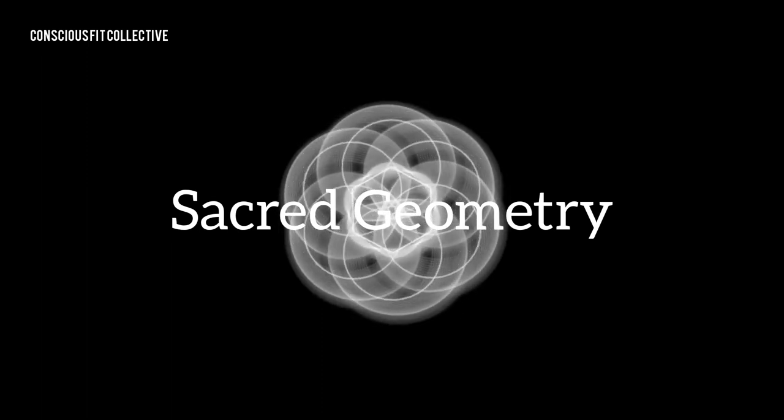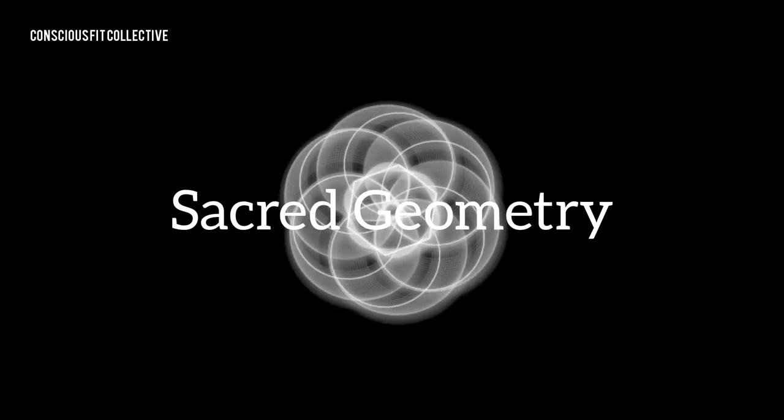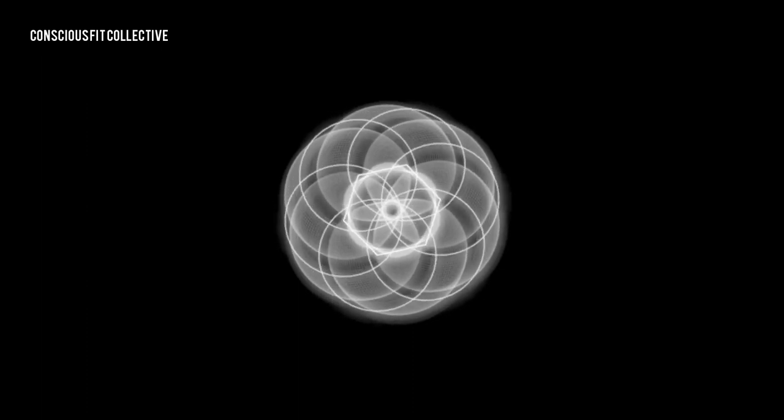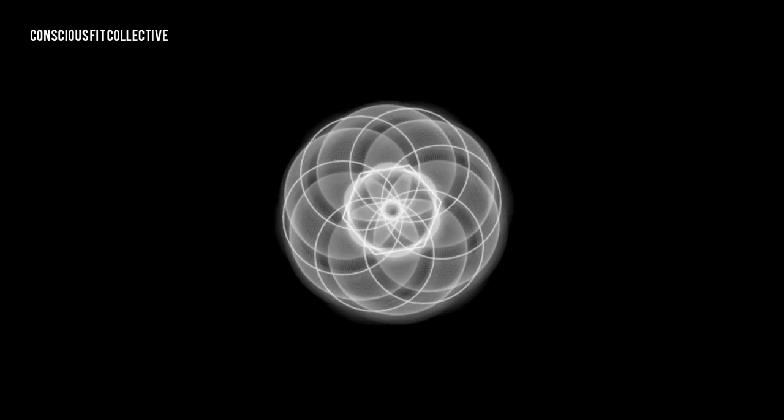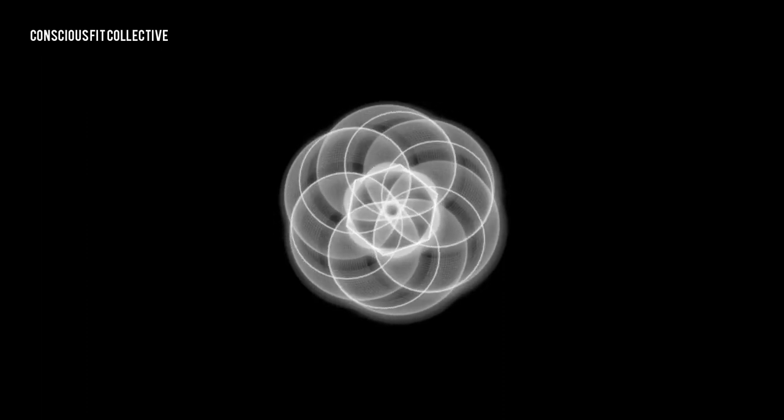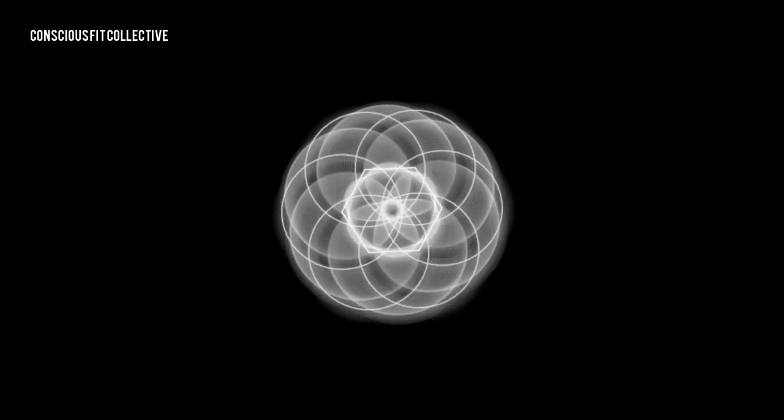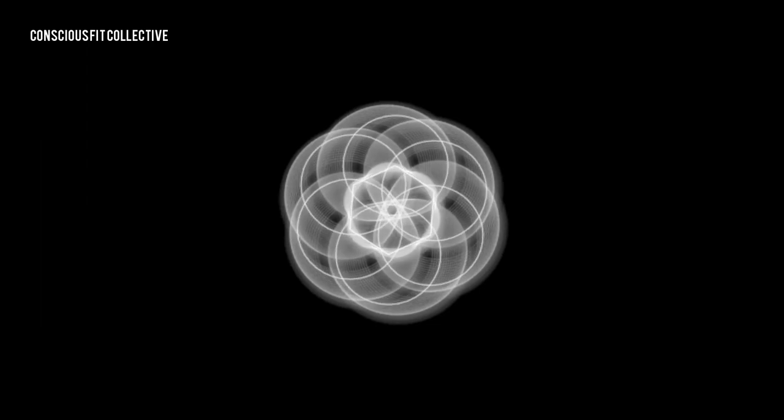Everything is geometry. The seed of life, also known as the Genesis pattern, is formed from seven circles. These circles represent the creation of Earth in seven days. The first circle does not correlate with the first day of creation, but rather represents consciousness. It is the core of the toroidal field.